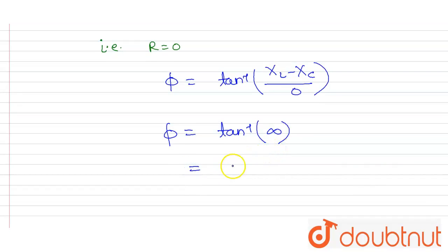tan inverse infinity. The value of tan inverse infinity is pi by 2. So this is the phase difference